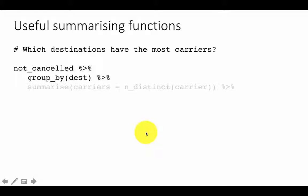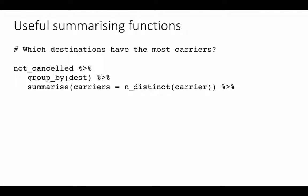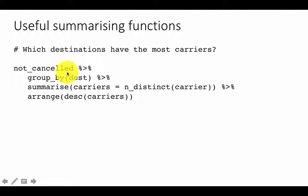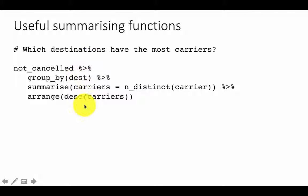To find which destinations have the most carriers, group by destination and use the function n_distinct on carrier. Recall that unique gives you the actual distinct values, whereas n_distinct gives you the count of distinct values. So we take not-cancelled flights, group by destination, summarize with n_distinct(carrier), and arrange in descending order of carriers. This is a great example of how piping lets you write complex computations step by step very easily.